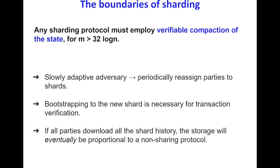Intuitively, this holds because any sharding protocol secure against slowly adaptive adversaries must automatically reassign parties to shards at the end of each epoch. To verify new transactions, these parties must receive the verifiable correct UTXO pool. But we need them to do that without downloading the full shard history; otherwise, we eventually have storage proportional to a non-sharded protocol.